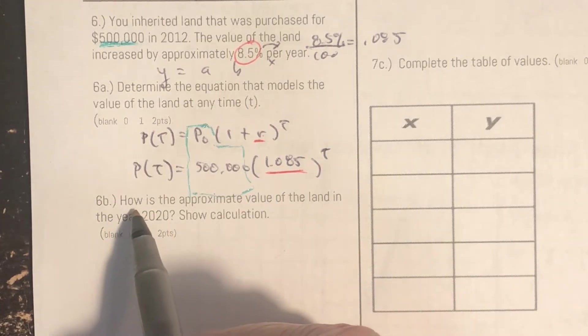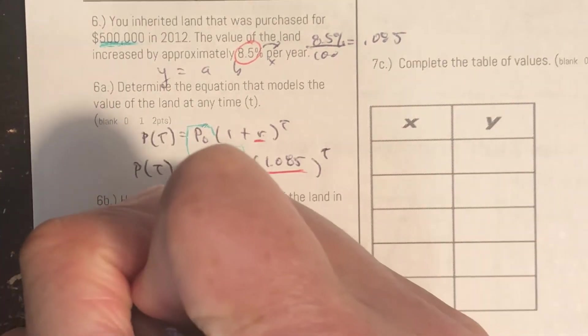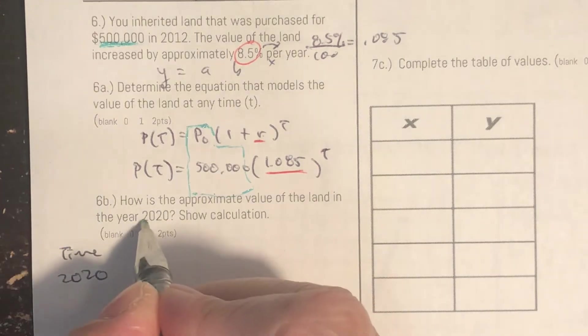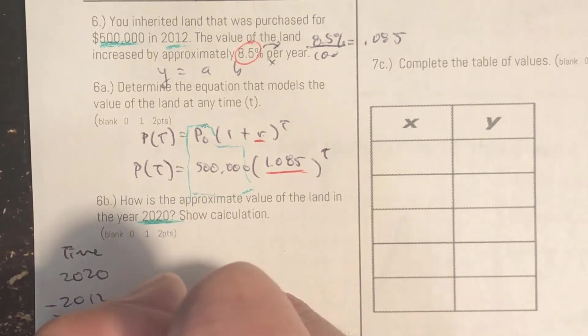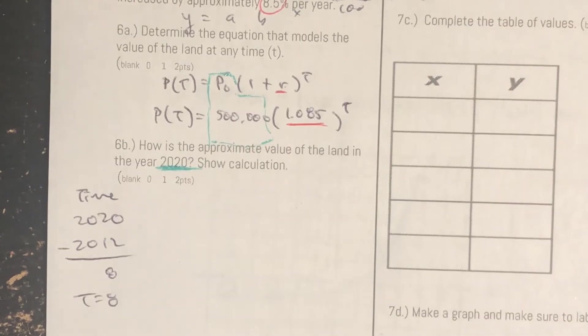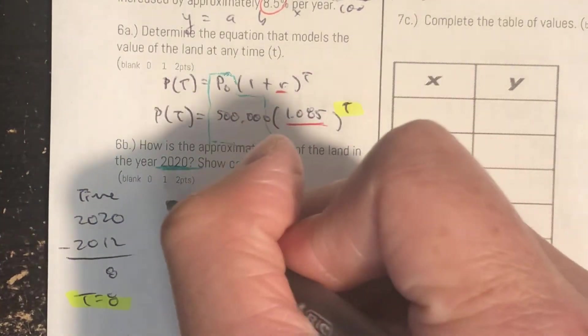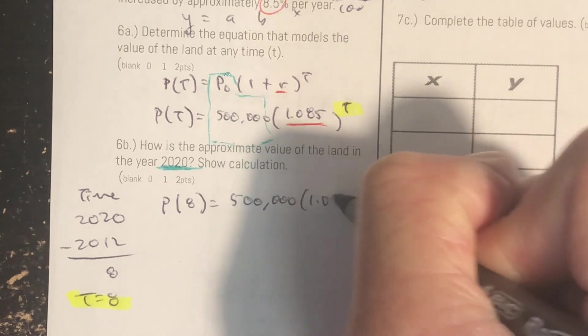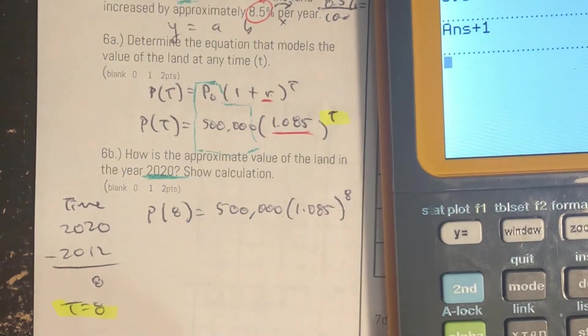Now if you wrote something like y equals 500,000 times 1.085 to the x power totally acceptable. Question 1b: What is the approximate value of the land in the year 2020? So for time we need to think about from 2020 from 2012. So that gives me a t is going to be equal to 8. So we can just put that in there.